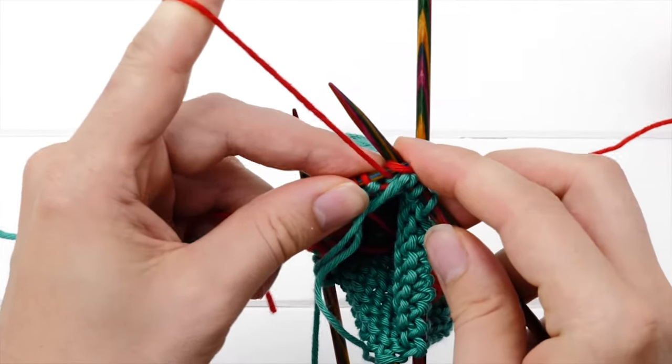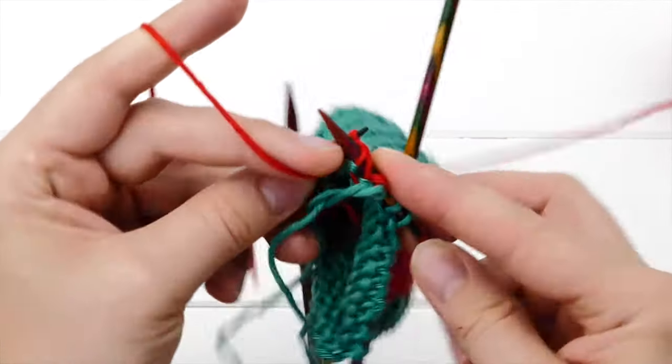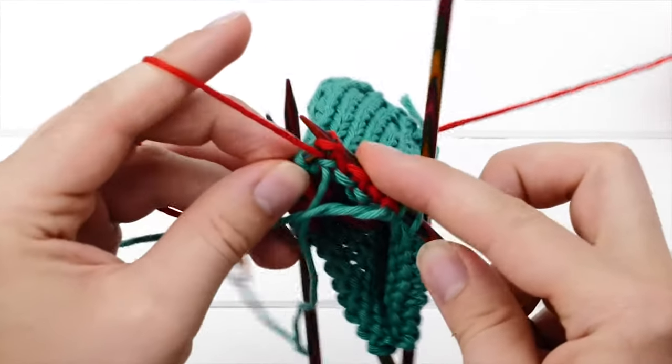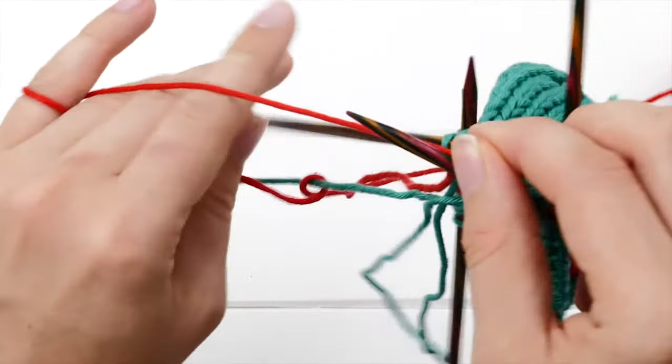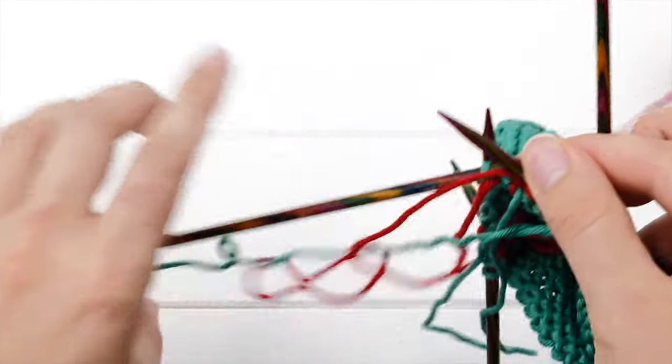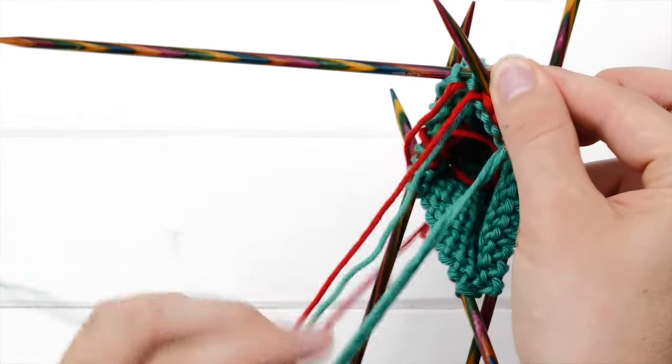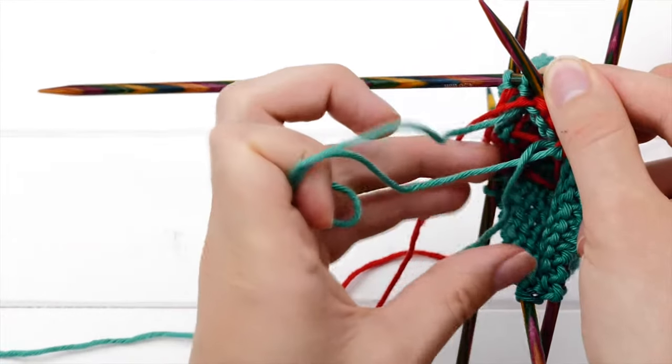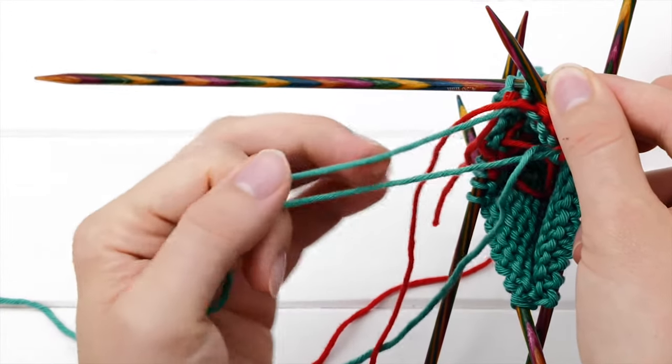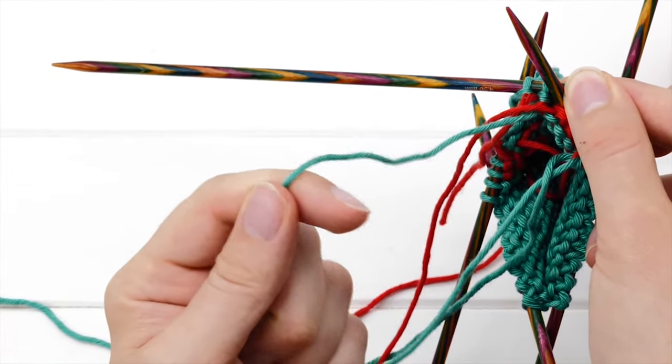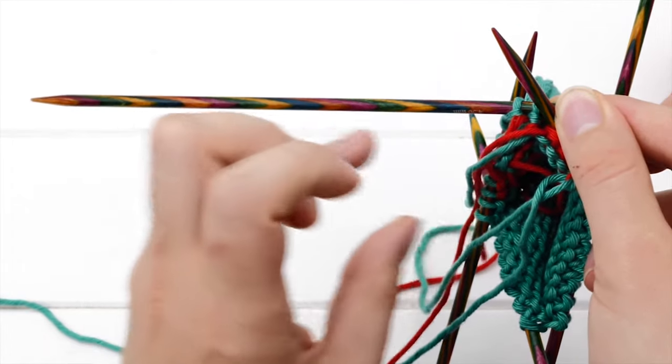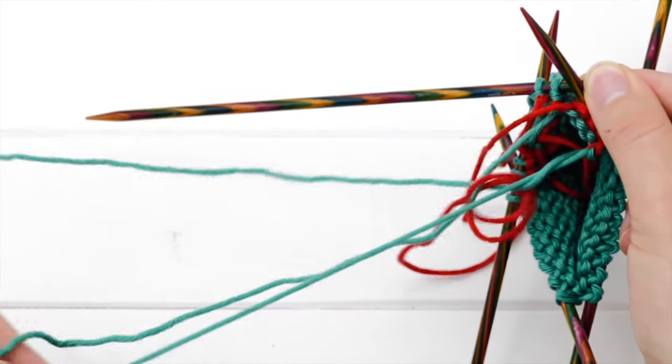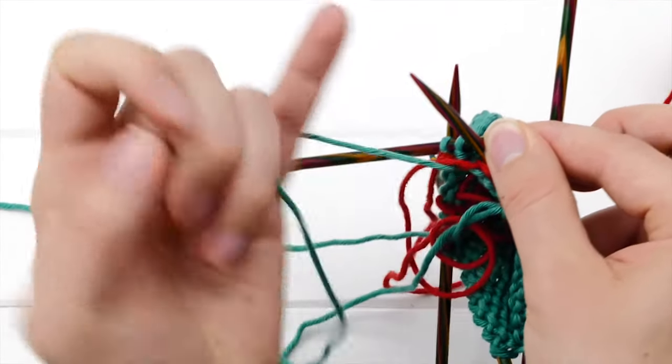But first, obviously, you have to purl the color panel like normal. One, two, three, four. And when you're at the end, you have to find the beginning of the loop. You're not going to use the working yarn. You will only knit from the loop we just created. So, pick it up. If it isn't big enough, just pull on it until it's big enough to knit with it.